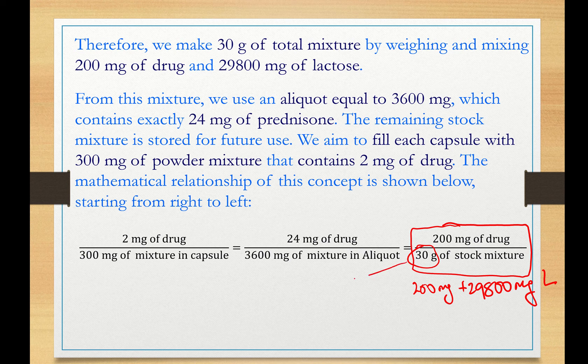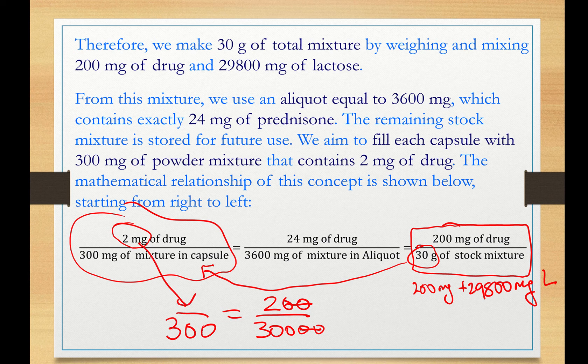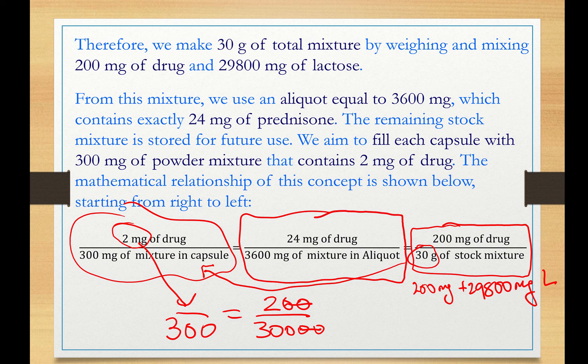From that, I'm going to use each time 300 mg to fill each capsule. In these 300 mg, there should be 2 mg of drug. And notice there has to be because this is a ratio, right? 200 over 30,000, 300 over 2. This is the magic of this. So we use this ratio here just to calculate S. We are not physically preparing the aliquot. So there is no error associated with measuring an aliquot.